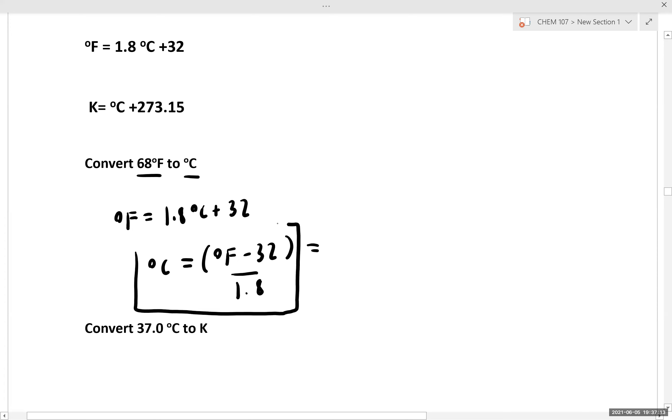You may want to remember this formula that we've obtained by rearranging this Fahrenheit to Celsius conversion equation. Now, given that we have this conversion equation set up, all we have to do is plug in our temperature. So we have (68°F - 32) / 1.8. That gives us 20 degrees Celsius, pretty close to room temperature.